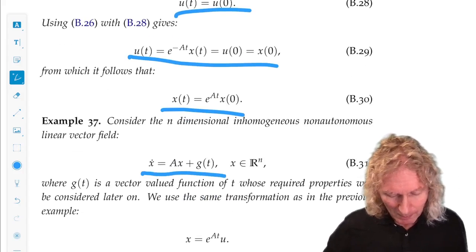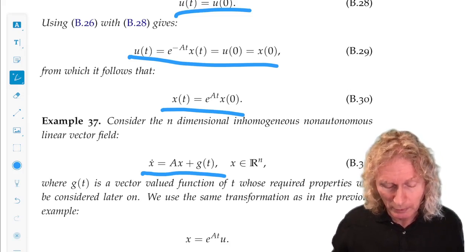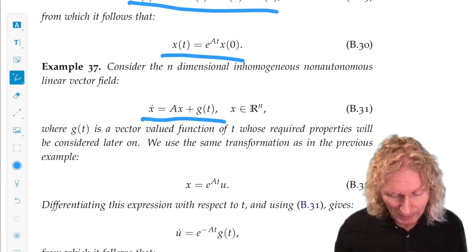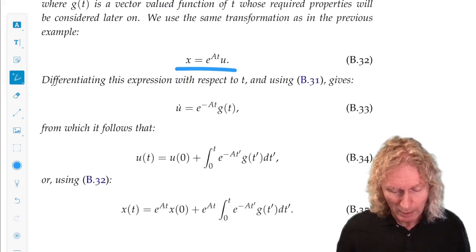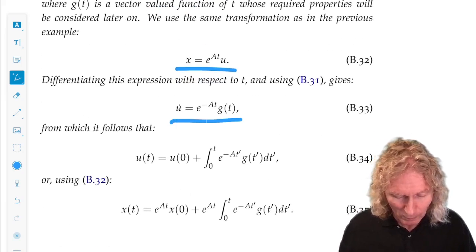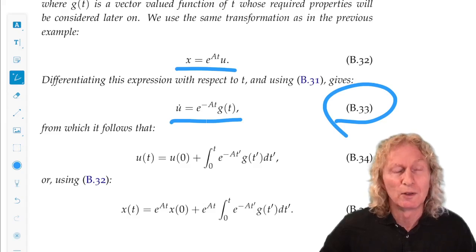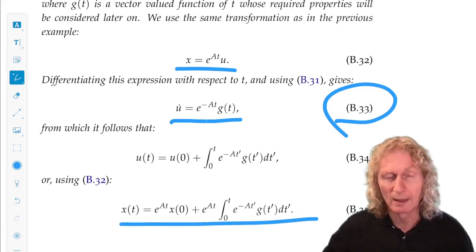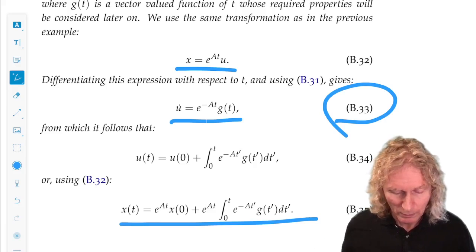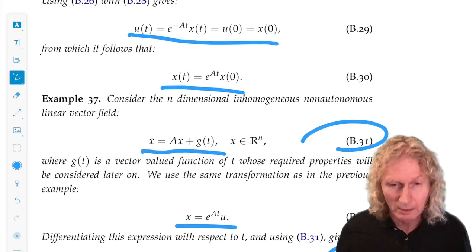All right, next, the same. X dot is AX plus G of T. G of T is now a vector depending upon the scalar T, the independent variable. We use exactly the same. We don't get U dot equals zero. We get this. We can integrate this up because the right-hand side of B.33 is just a function of T. We can integrate it, and this is what we get. Classic formula for this particular linear ODE.